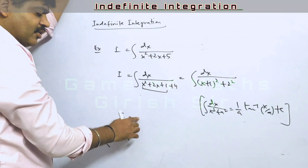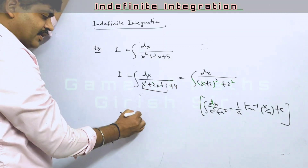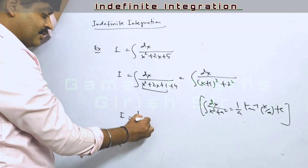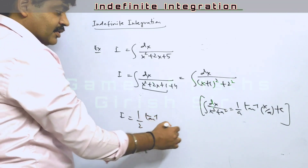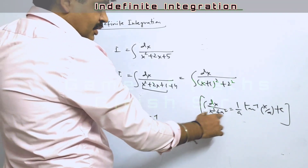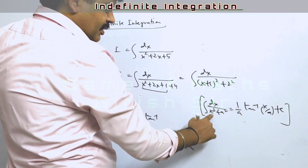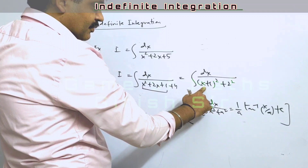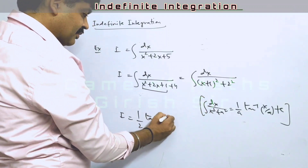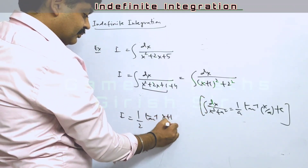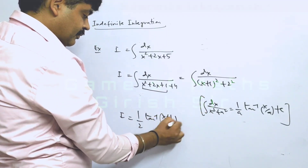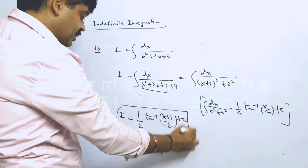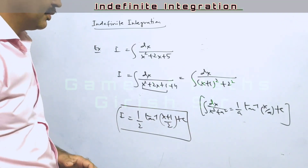Using the formula, I can write the next step as (1/a) tan⁻¹(x/a), where a = 2 and x is replaced by (x + 1). So the final answer is (1/2) tan⁻¹((x + 1)/2) + c.